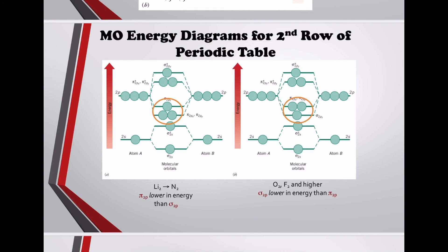Molecular orbital energy diagrams for second-row diatomics: for Li₂ through N₂, the pi 2p orbitals are lower in energy than sigma 2p — the ordering is 1, 2, 1, 2 for the pi and sigma levels. For O₂, F₂, and higher, sigma 2p is lower in energy than pi 2p — the ordering becomes 1, 2, 2, 1.